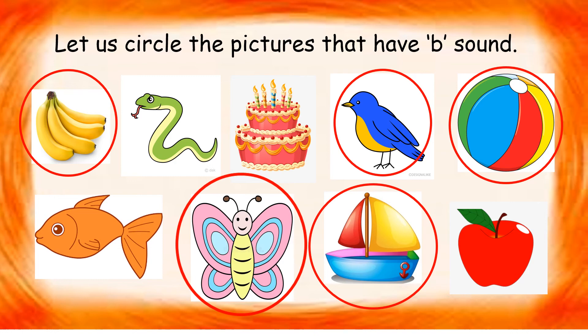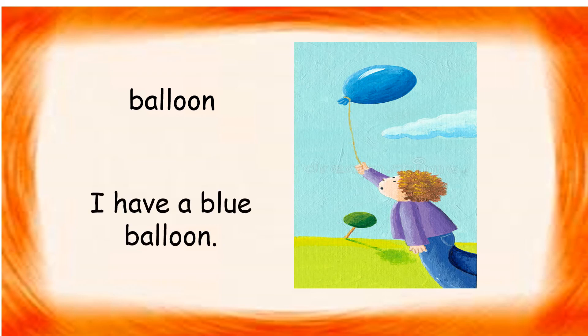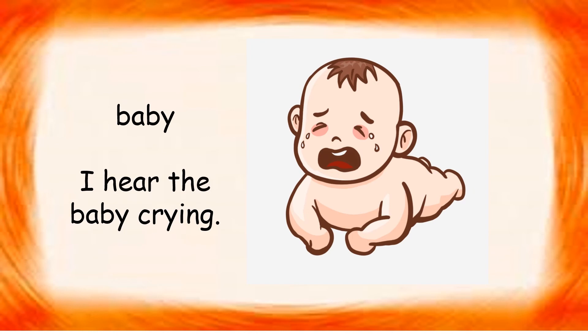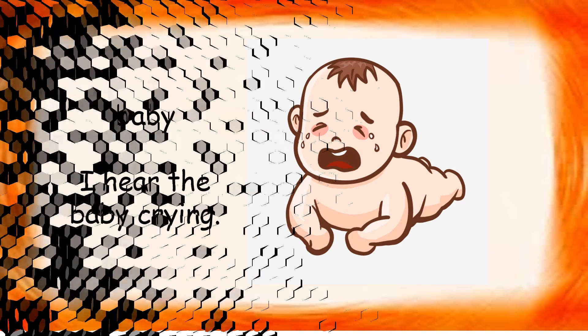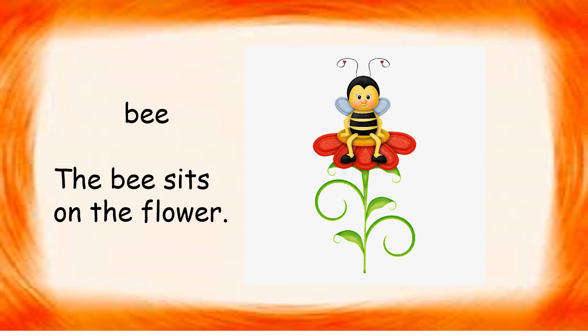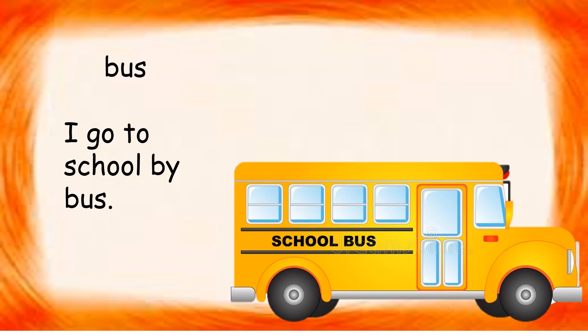Now let's look at the pictures and make some sentences about those pictures. I have a blue balloon, says the boy. Oh, that's a baby — I hear the baby crying. Bee — the bee sits on the flower. Bus — I go to school by bus.